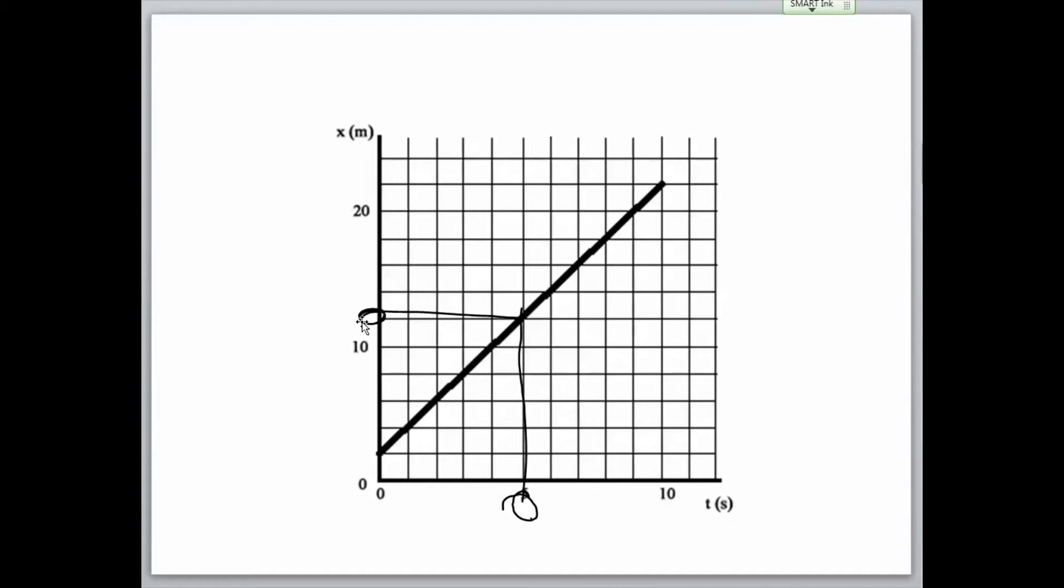Now, at first, it may appear that the position is all we can tell from a position graph, but there's actually a lot more hidden in there. Another great thing we can find in a position versus time graph is the velocity of an object.